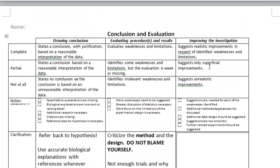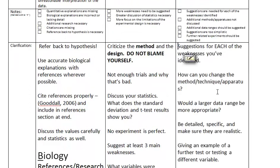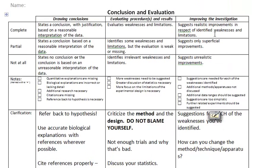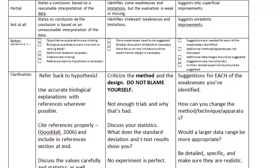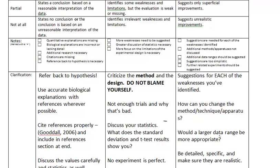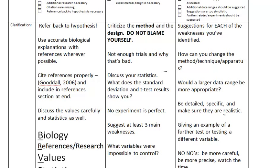Really simple. For each one of these things that you mentioned, you need a real suggestion. You can read right here: realistic improvements in respect to identified weaknesses and limitations. If you only want one point, you would give very superficial improvements, and if you want zero points then just make up stuff. Suggestions for each of the weaknesses you've identified: how you can change the method, or the technique, or the apparatus that's actually being used. Would a larger data range be more appropriate? We've discussed that already.